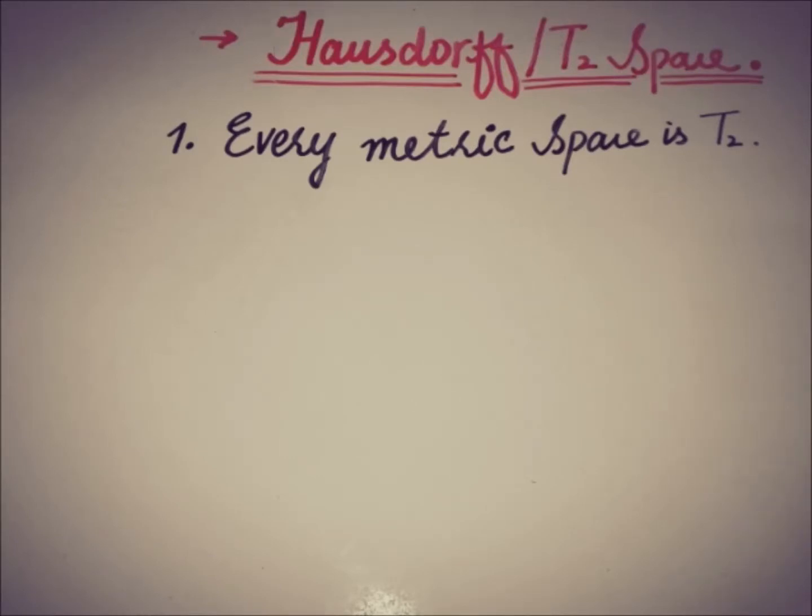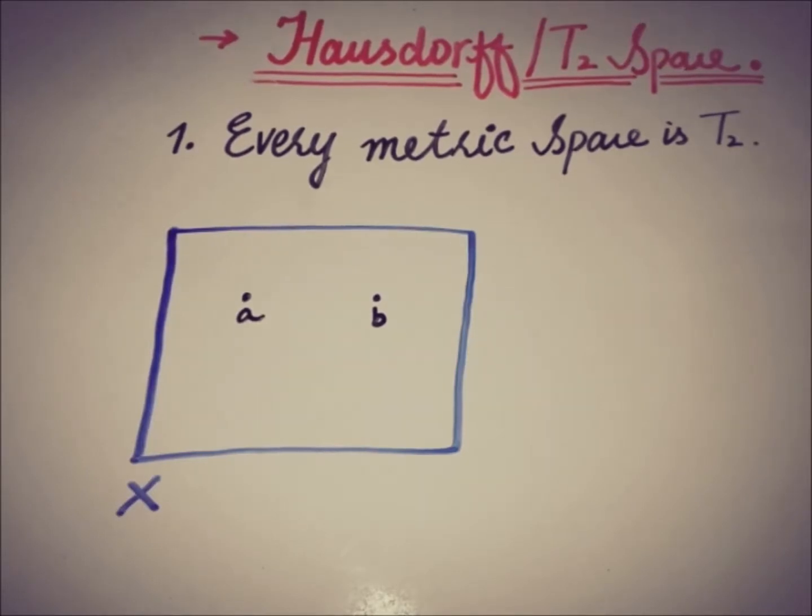If we have a metric space X with metric D, and A and B are any two distinct points of X, then D(A,B) must be greater than zero. The concept of metric spaces was discussed in one of the previous videos on functional analysis, so you may check it.